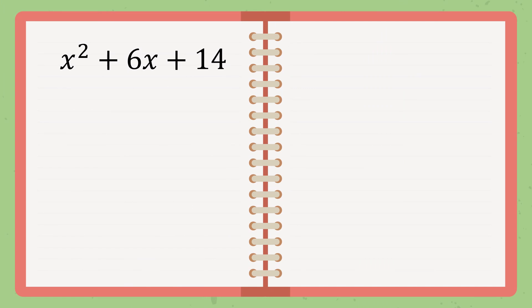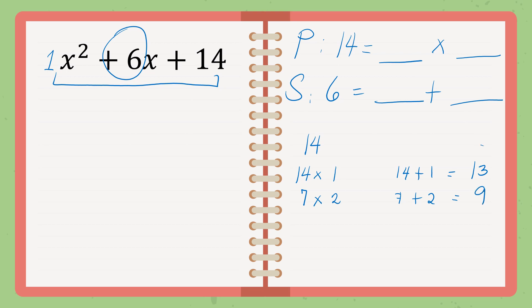Now, x squared plus 6x plus 14. We will have, again, the PS. So, we have imaginary 1 here. So, 14 multiplied by 1, the answer is 14, and the middle is 6. Now, think of the two numbers again, that when you multiply, the answer is 14, but when you add, the answer is 6. So, factor 14. So, we have 14 multiplied by 1, 7 multiplied by 2. Then, add them. 14 plus 1 is 13. 7 plus 2 is 9. Oh! There's no 6. So, therefore, it is the so-called prime.